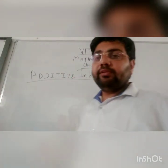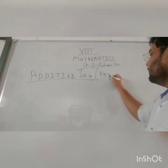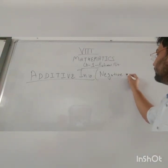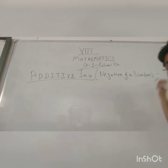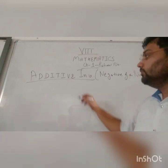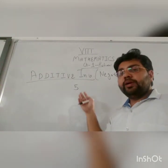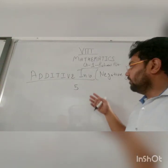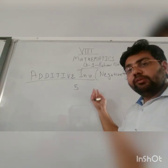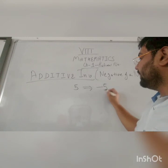Now what is additive inverse? This is also known as the negative of a number. Suppose we have the number 5. What is additive inverse? What should we add to the given number so that the result is 0. Or you will just take the negative of this number. So its additive inverse will be minus 5.